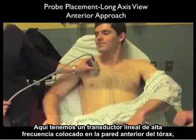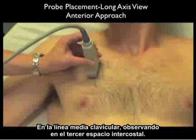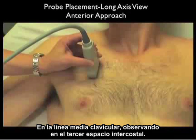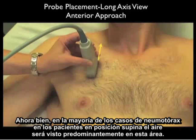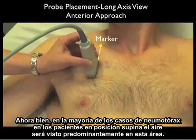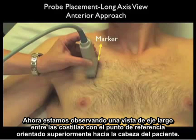Here we have the high-frequency linear array probe positioned on the anterior chest wall at about the mid-clavicular line, looking into about intercostal space 3. In most cases of pneumothorax with the patient supine, the air would be predominantly seen in this area. Note we're looking in a long axis configuration between the ribs, with the marker dot oriented superiorly towards the patient's head.